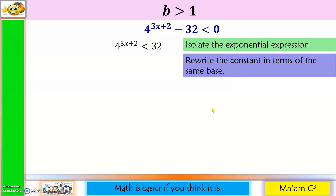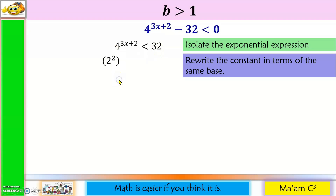Step 2: rewrite the constant in terms of the same base. Just like in exponential equations, we have to make our bases the same. I cannot express 32 as 4 squared (that is only 16), and 4 cubed would be 64. So I need a base raised to a certain exponent that gives 4, and using the same base to give 32. For 4, I'll make it 2 squared, and copy the exponent 3x plus 2. For 32, I'll express it as 2 to the 5th power, since 2×2×2×2×2 equals 32.